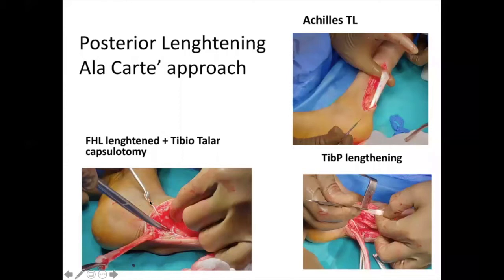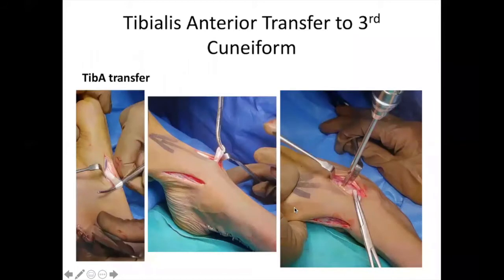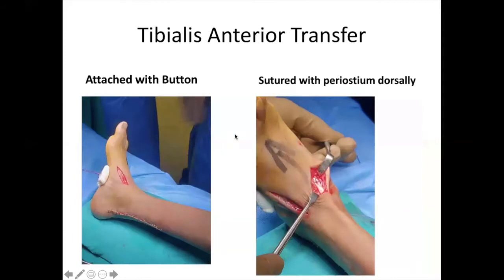This is the flexor hallucis longus and tibialis posterior — Z-lengthening. Then I transferred the semitendinosus and half of the tibialis posterior to half of the tibialis anterior. This child became better as you see here — this is a good-looking foot. He is walking nowadays.